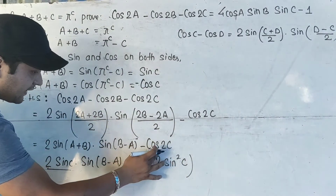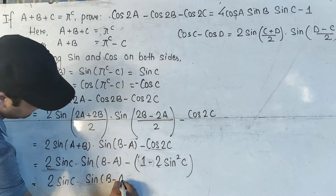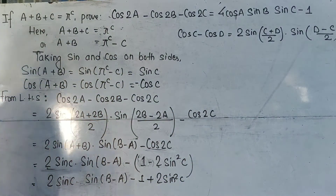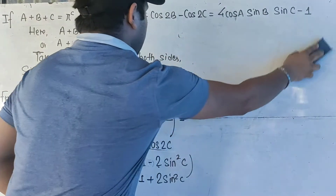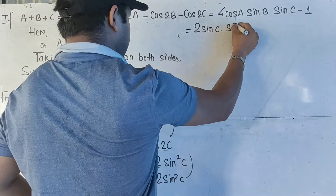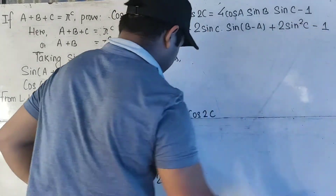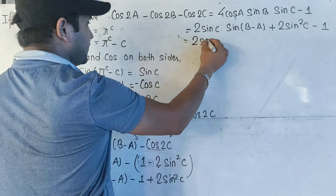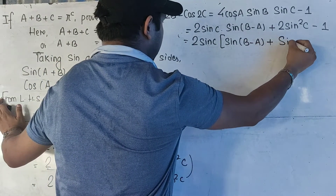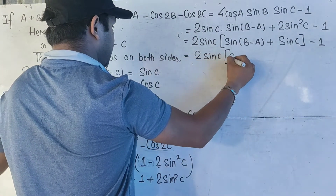Now let us remove the bracket. When you remove the bracket, you will have here 2·sinC·sin(b minus a) minus 1 — and minus minus gives you plus 2·sin²C. Now let us rearrange the terms. You can write 2·sinC·sin(b minus a) plus 2·sin²C minus 1. Now we can take 2·sinC common, and after taking 2·sinC common you will have sin(b minus a) plus sinC, minus 1 as it is.